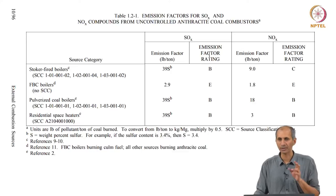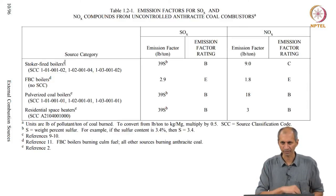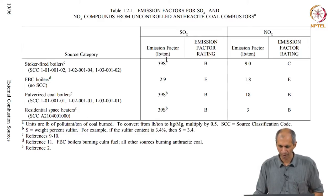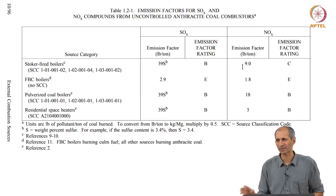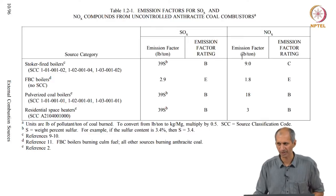For NOx from uncontrolled anthracite coal combustors — uncontrolled means no combustion control equipment for SO2 or NOx — the first column shows stoker fired boilers. For stoker fired boilers, the emission factor is 39 pounds per ton (lb/ton) for SO2 and 9 pounds per ton for NOx. These are average numbers used as guidelines for designing, and based on quality control considerations, they do not have plus/minus uncertainty listed.